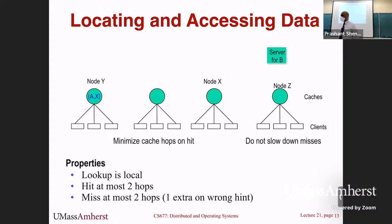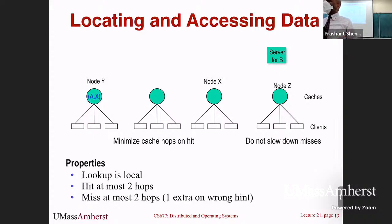Regarding using multicast to notify proxies in the server push or lease approach: the notifications can be sent either as N unicast messages, one to each proxy that has the content, or as a single multicast message where all relevant proxies are listening. Multicast is a more efficient way to send notifications. However, this is orthogonal to whether you use a lease or not.